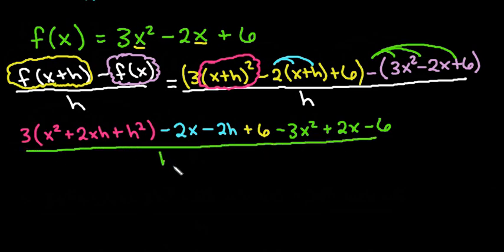All of this is over h. I still have to distribute this 3 into here, but I'm going to go ahead and eliminate anything that I can just so that I don't have to write it again. So my negative 2x and my positive 2x cancel out. And my positive 6 and my negative 6 cancel out.